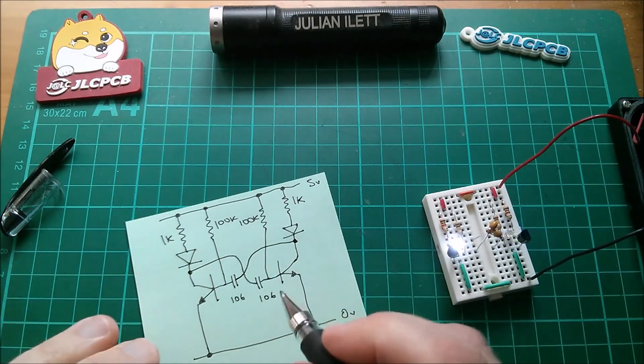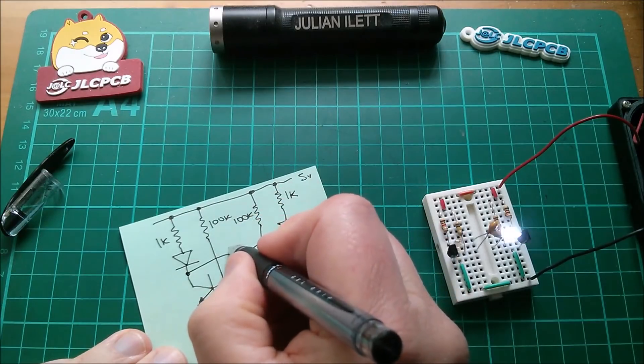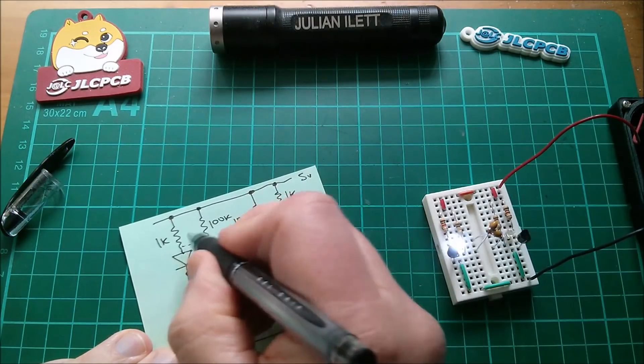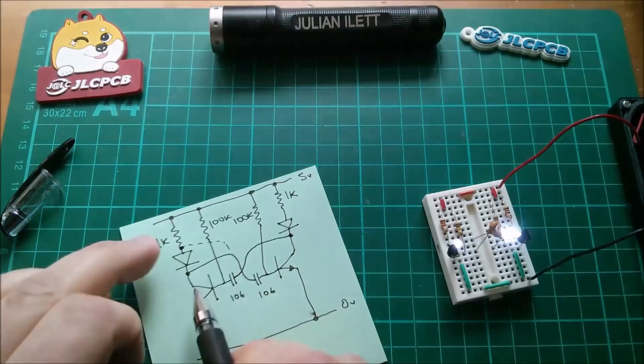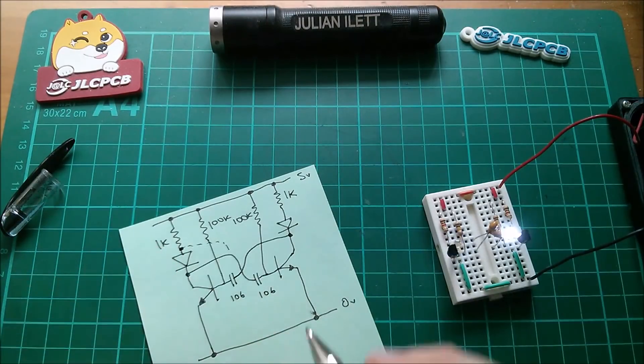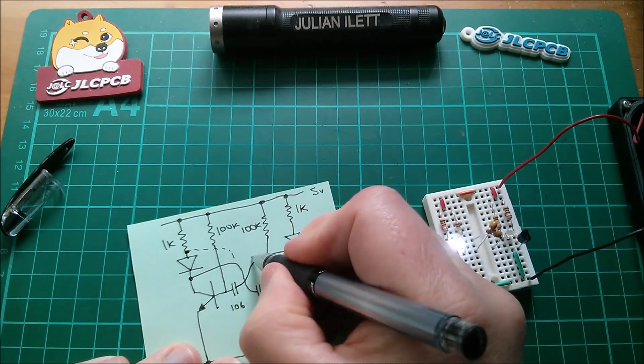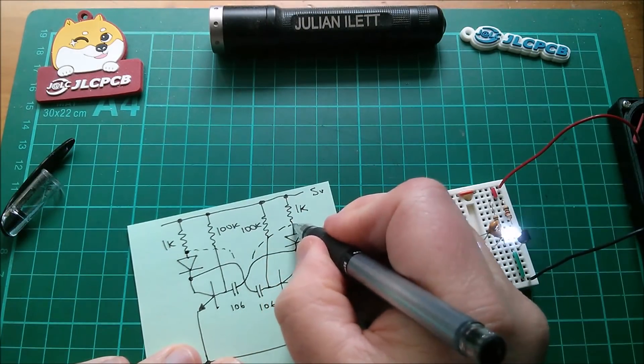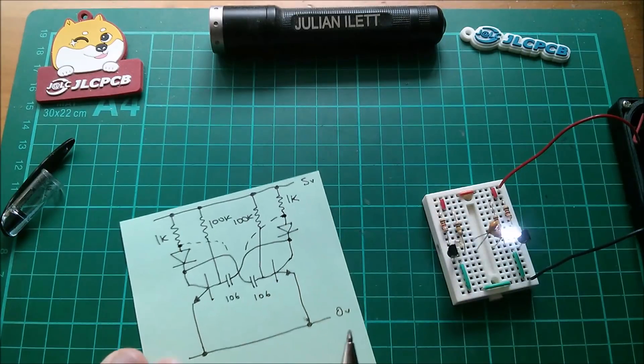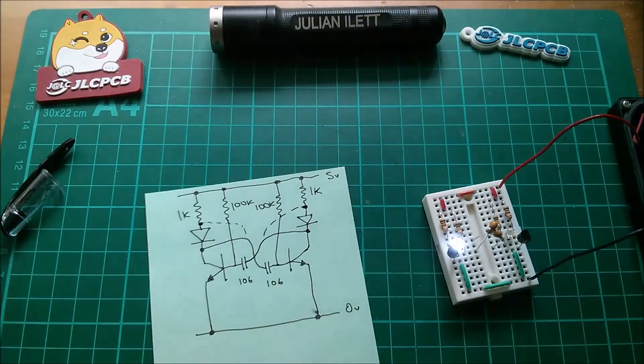But there is the alternative that you can have it coming up here to the junction between the LED and the resistor. And similarly, this one can go up to that point. Both of these work.